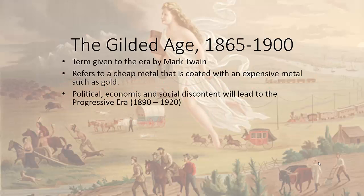So the Gilded Age. What is the Gilded Age? It's a term given to this era from the end of the Civil War, 1865, until 1900. Gilding refers to any cheap metal coated with a more expensive metal, usually gold or silver. Today a lot of jewelry uses palladium, a very expensive metal. Mark Twain actually meant it as a critique of the era — he called it gilding a lily — to describe the over-decadence and conspicuous consumption of the Gilded Age.